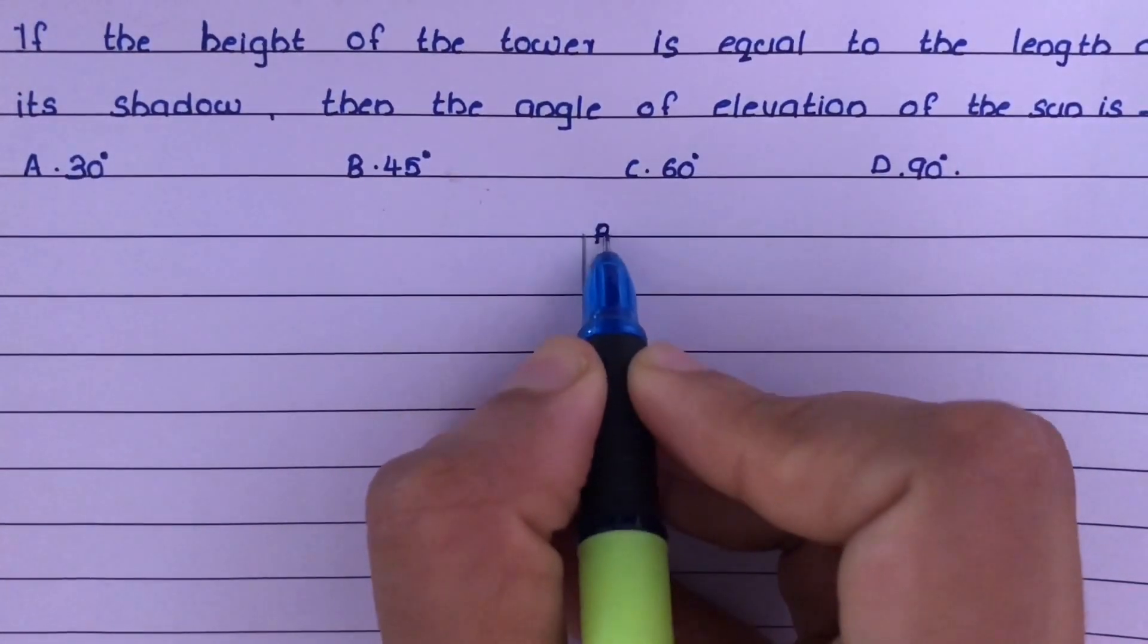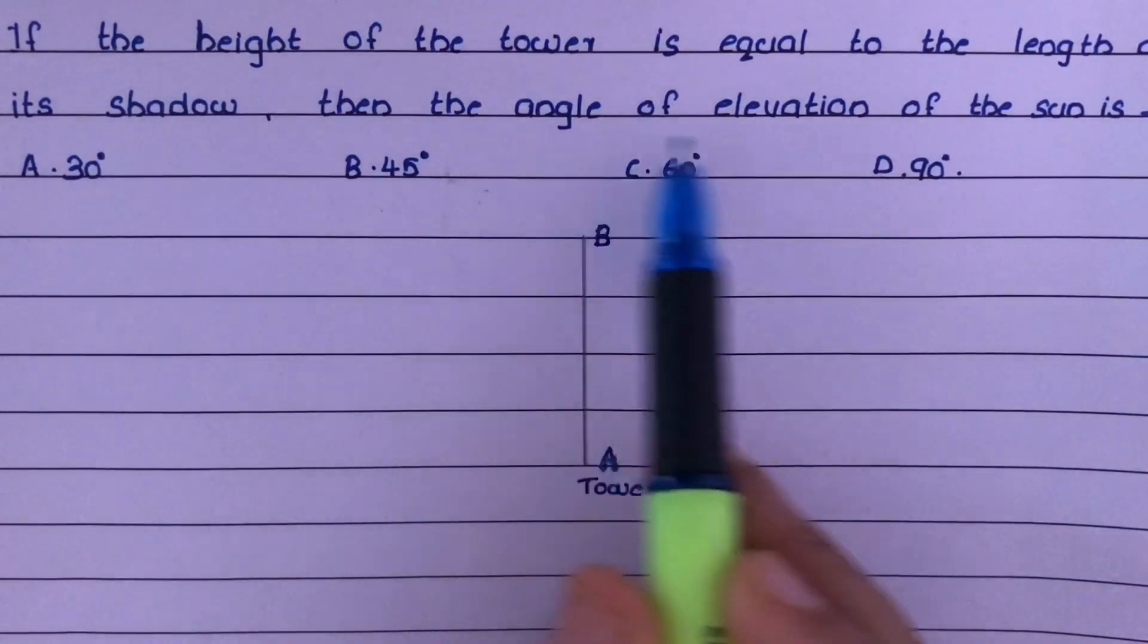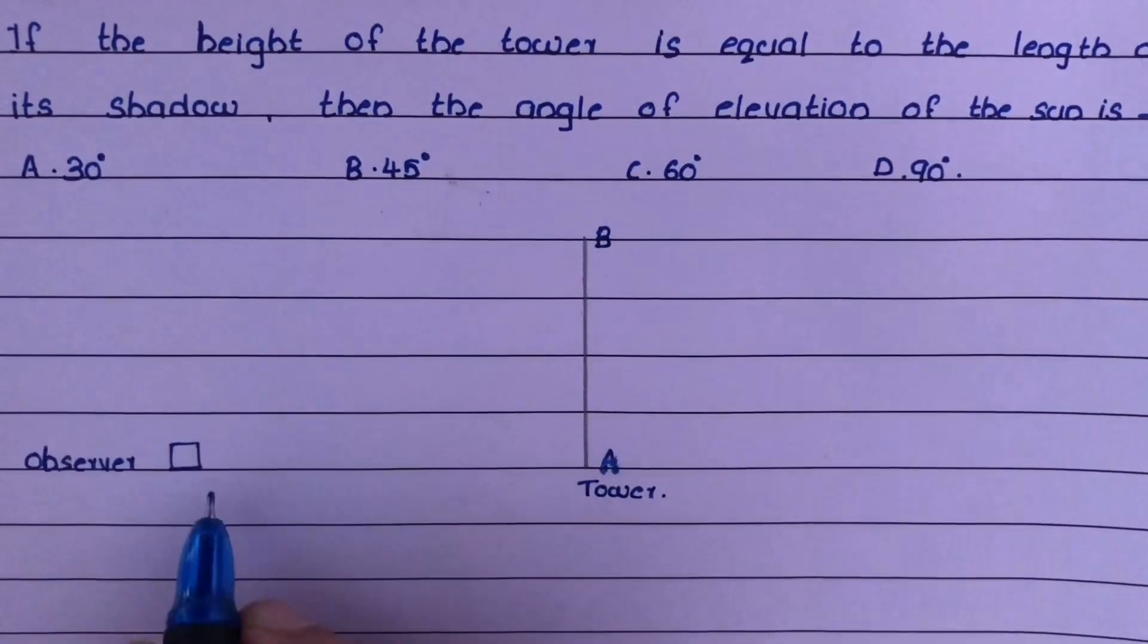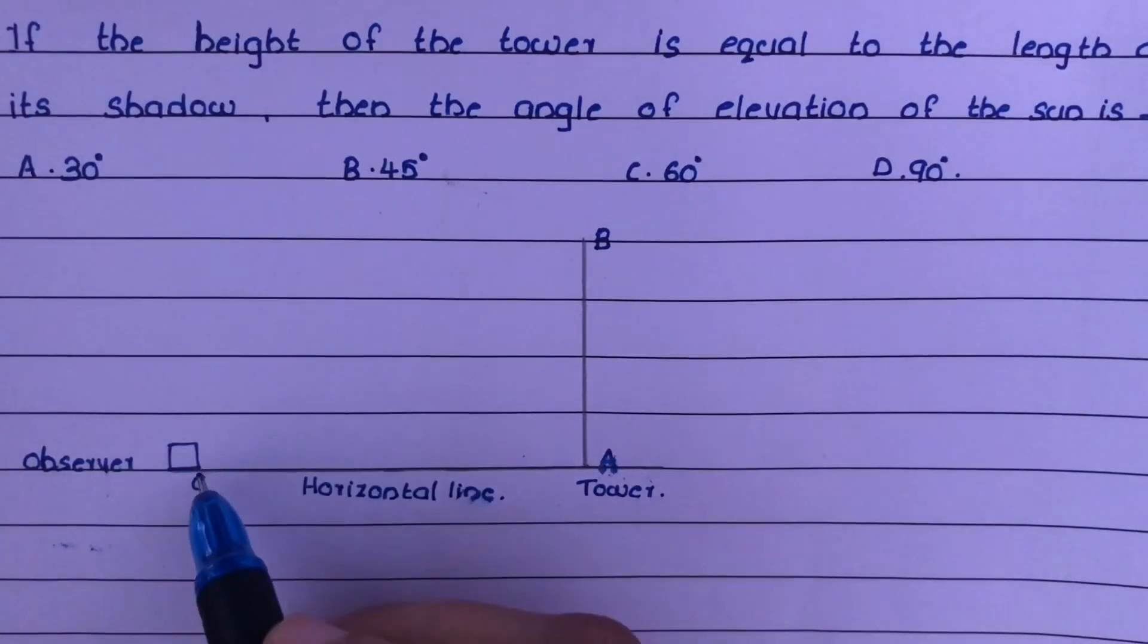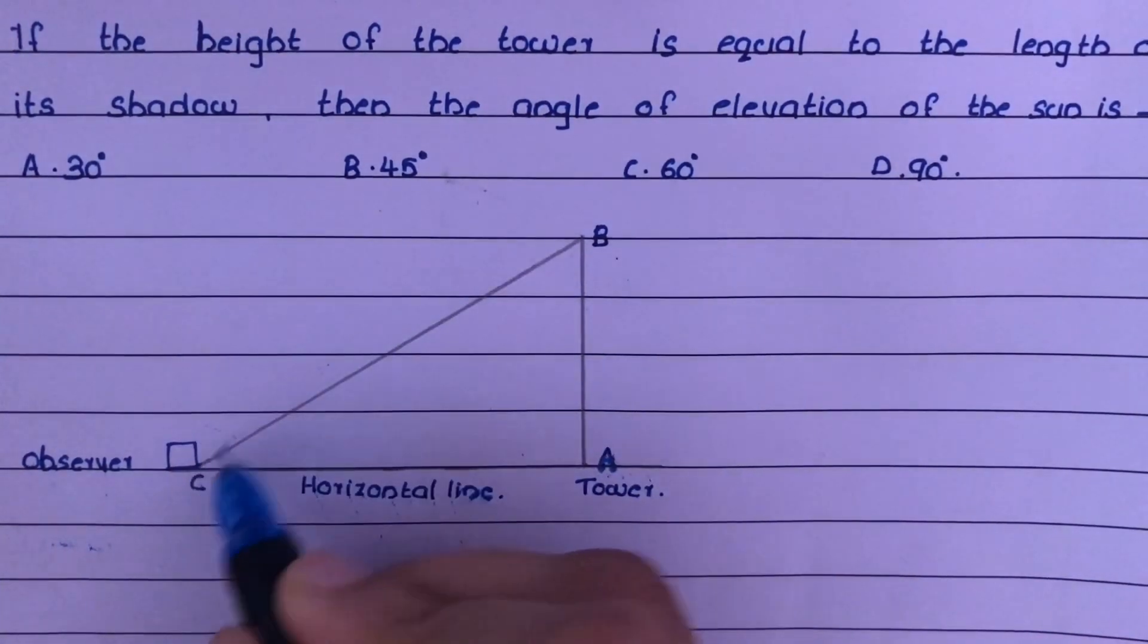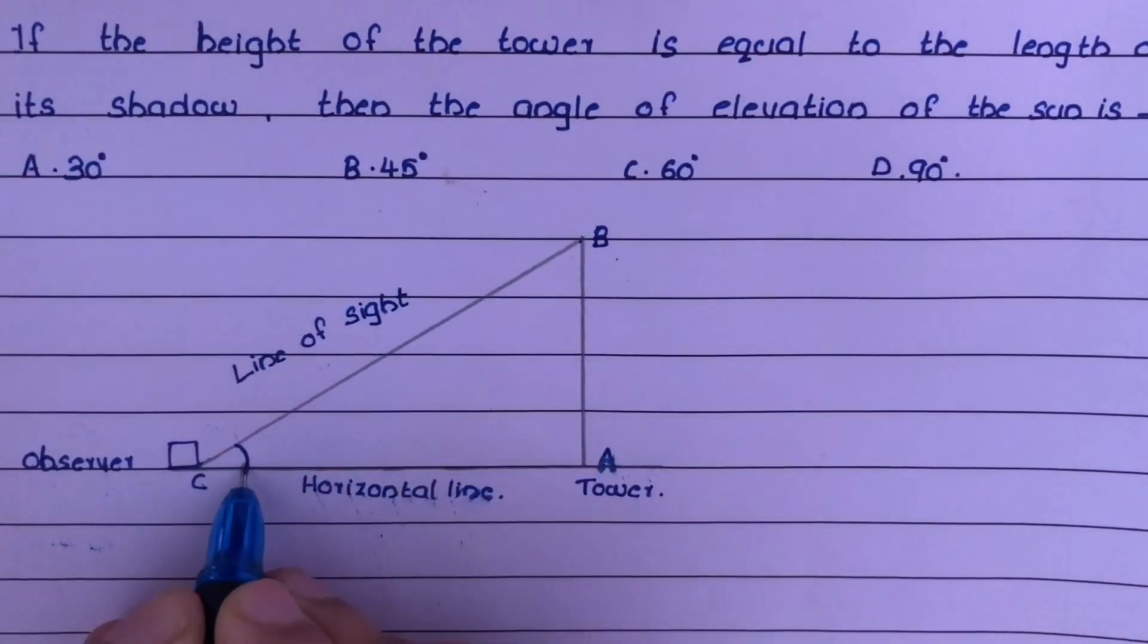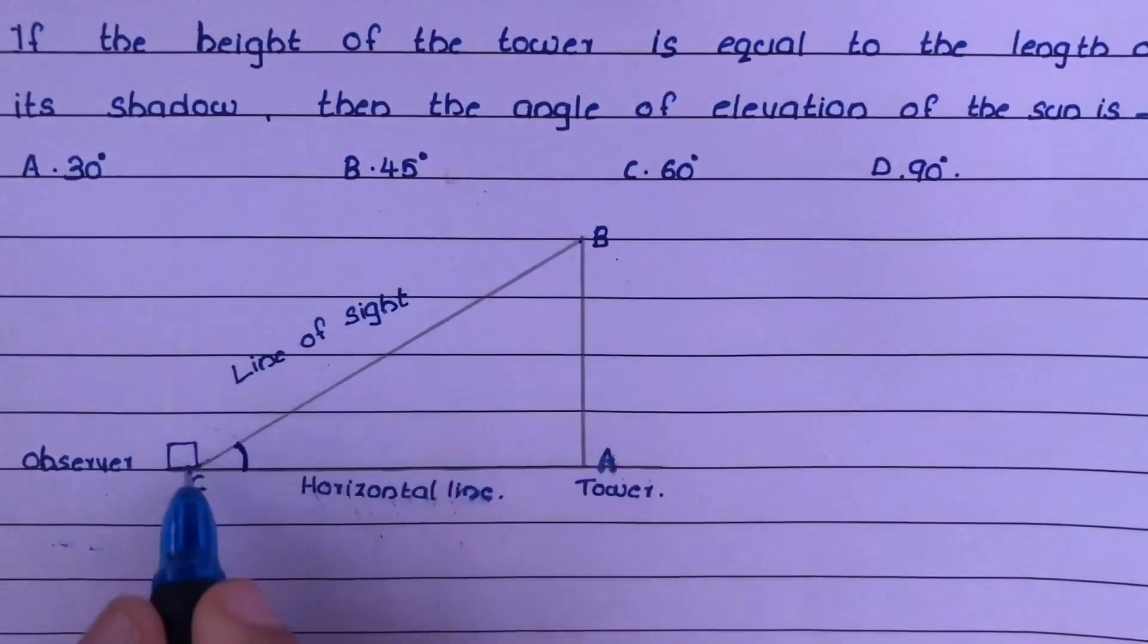Let AB be the tower. Here we need to find the angle of elevation of the sun. So consider an observer and a horizontal line. Mark this point CE. Now, the line of sight is CB. So the angle of elevation is angle C, which is BCE.